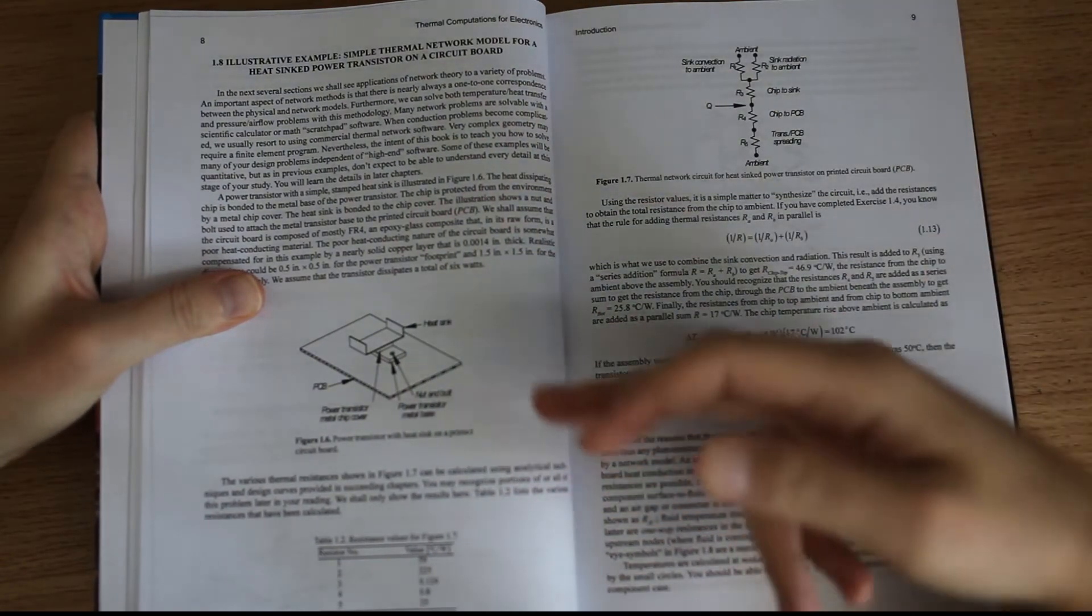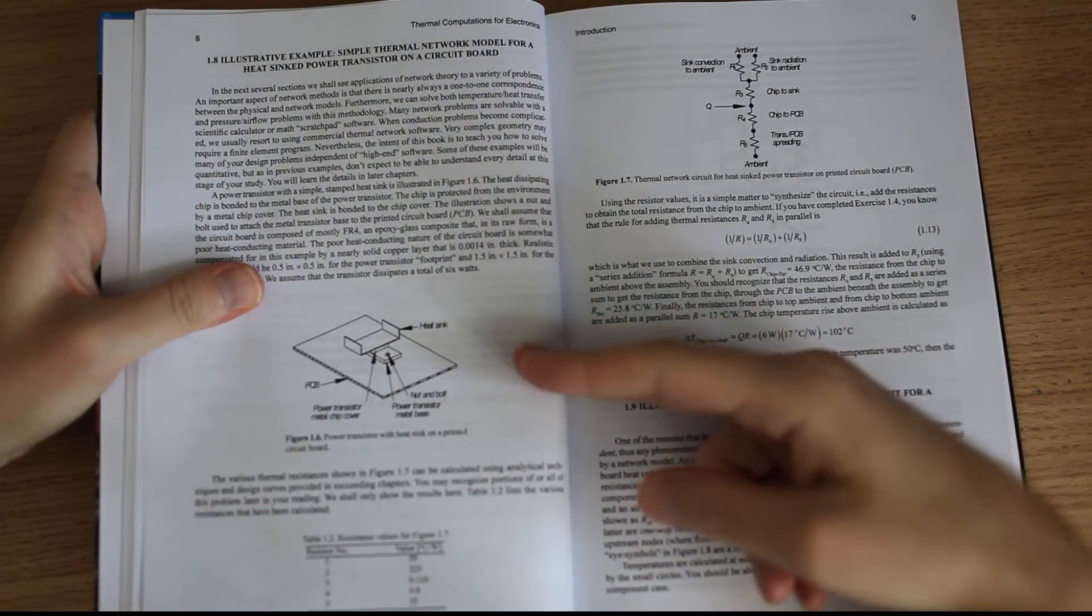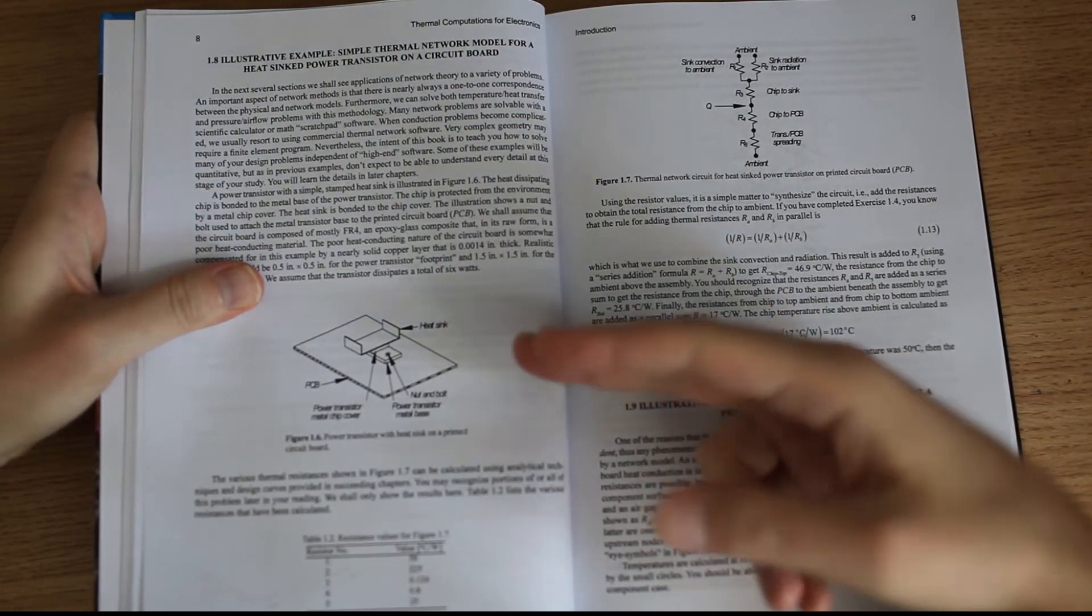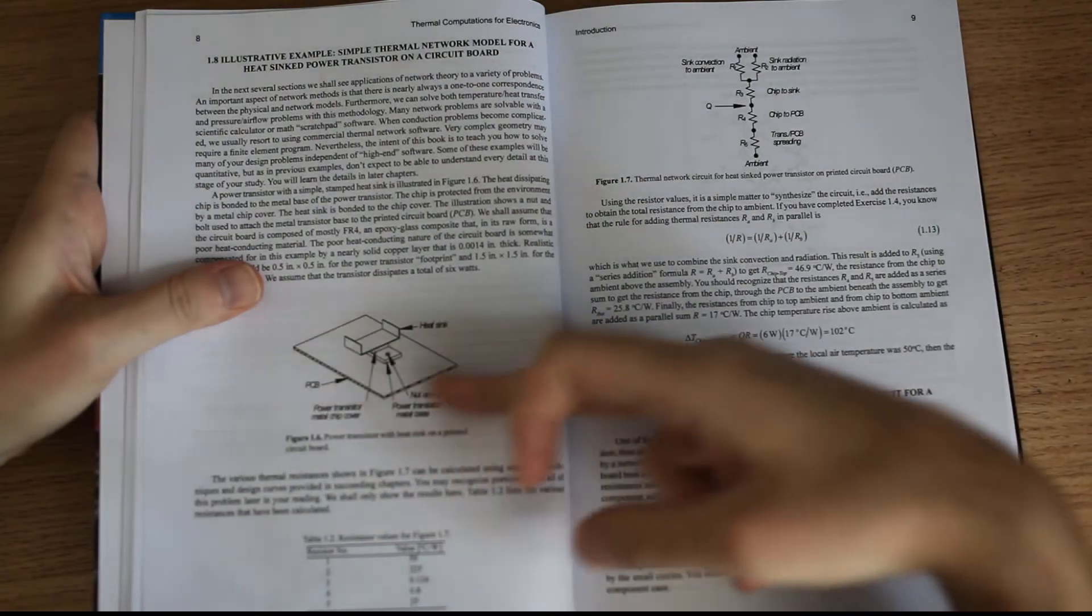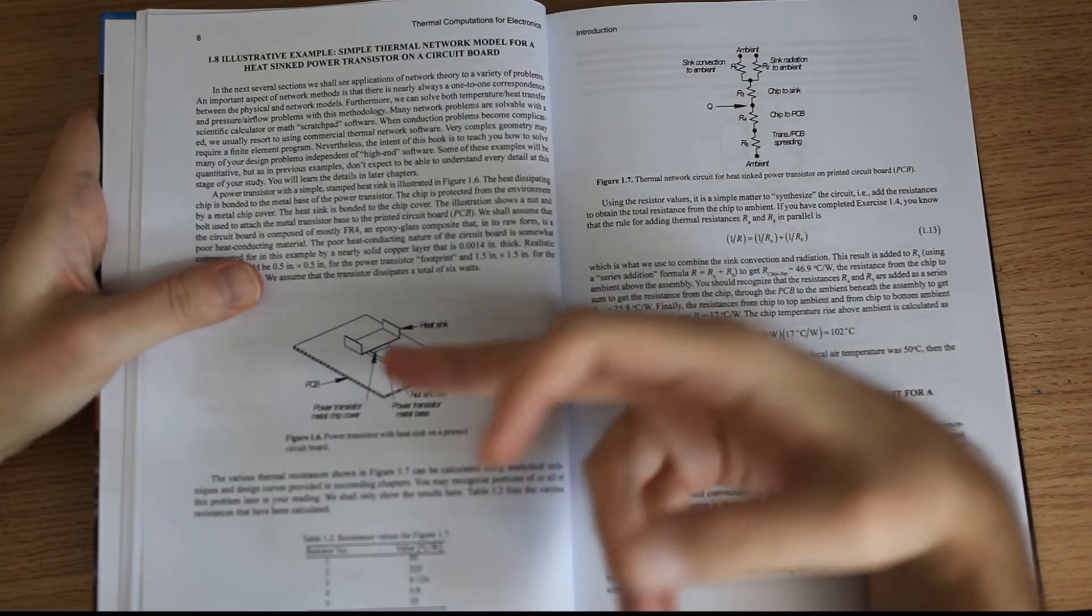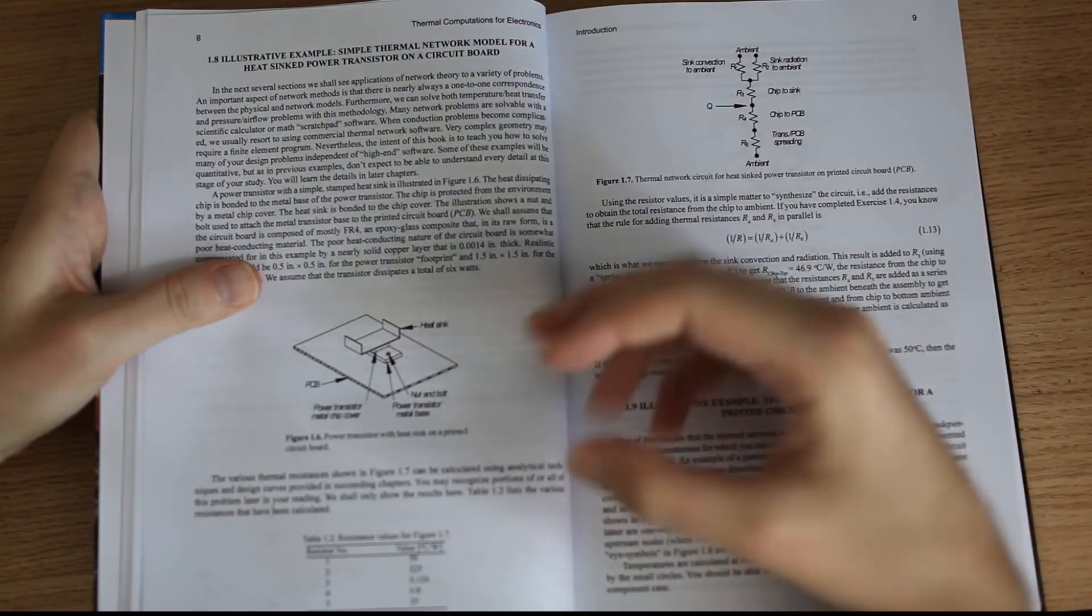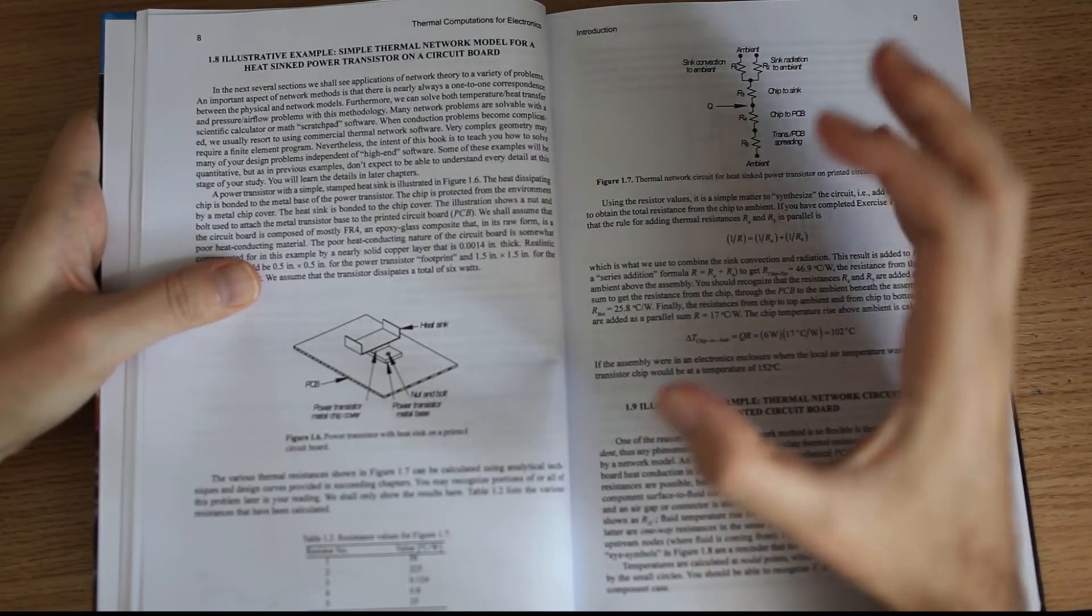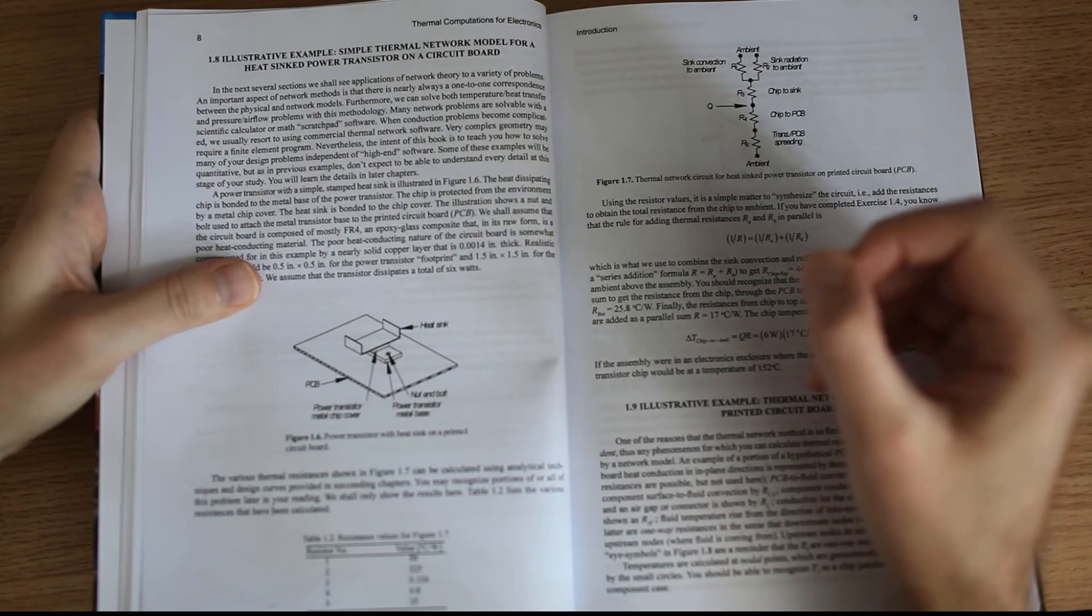This is, for example, a simple thermal network model. It just tells you that a simple PCB like that with a power transistor, heat sink, some bolts, this can be split out in terms of thermal resistance.